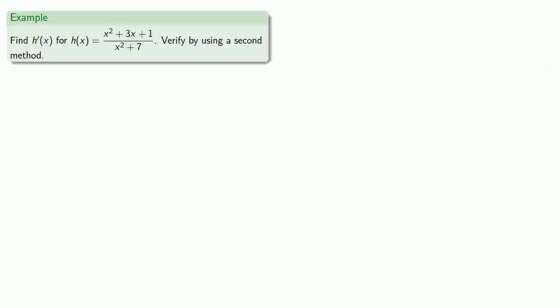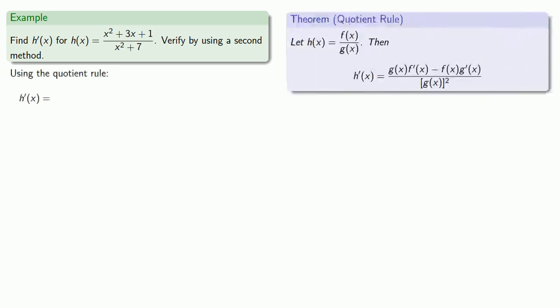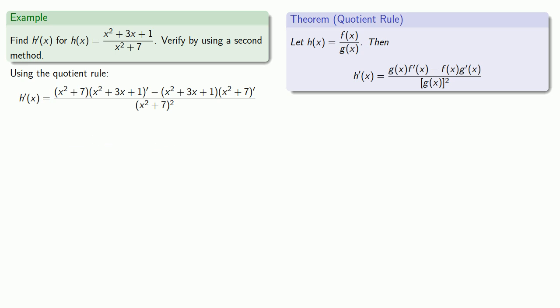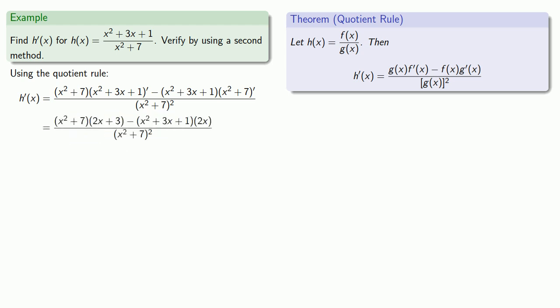So let's find the derivative of (x² + 3x + 1) over (x² + 7). Since it's on the internet, we may want to verify it. We'll invoke our quotient rule and write it down: denominator times the derivative of (x² + 3x + 1), minus the numerator times the derivative of the denominator, all over the denominator squared. Now we need to find the derivatives of (x² + 3x + 1) and (x² + 7), and we get our derivative.